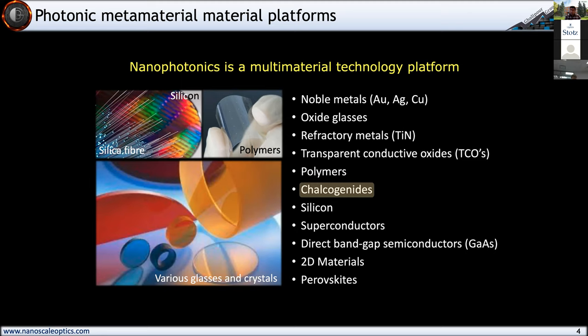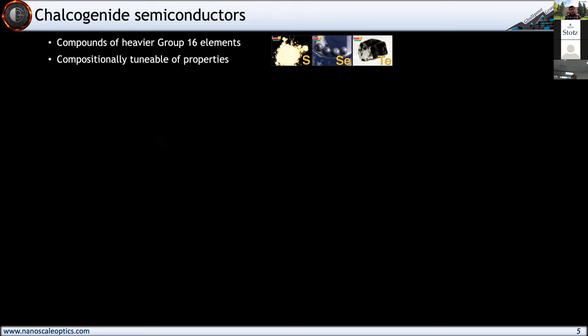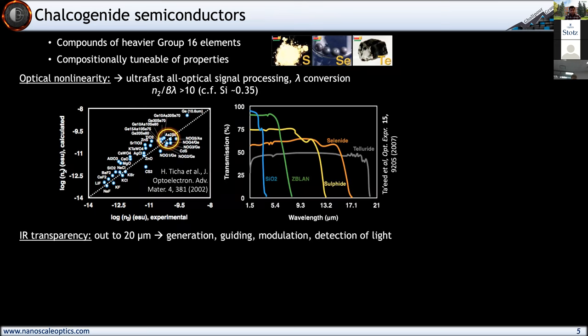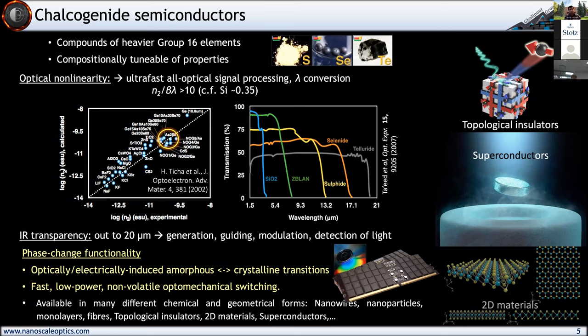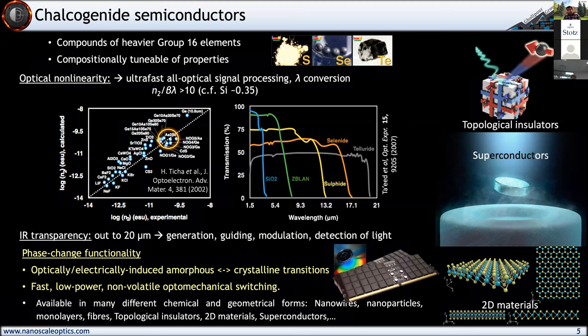For those not familiar with chalcogenide semiconductors, they are compounds of heavier group 16 elements: sulfur, selenium, tellurium. They have compositionally tunable properties — a major advantage. As we tune their composition, we can really adjust their optical properties and electronic properties, from permittivity, refractive index, extinction coefficient, to conductivities and resistivities, and anything related to most of the device platforms we make in the telecom computing realm.